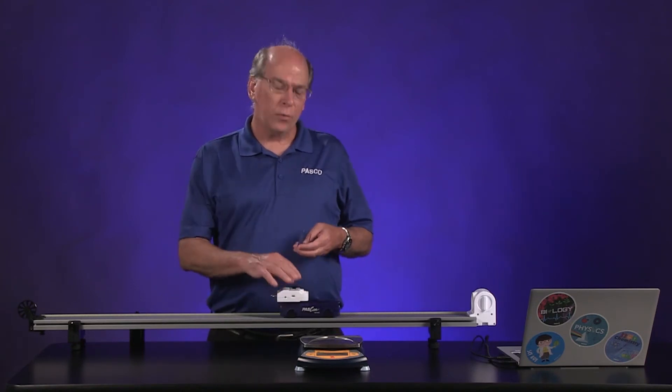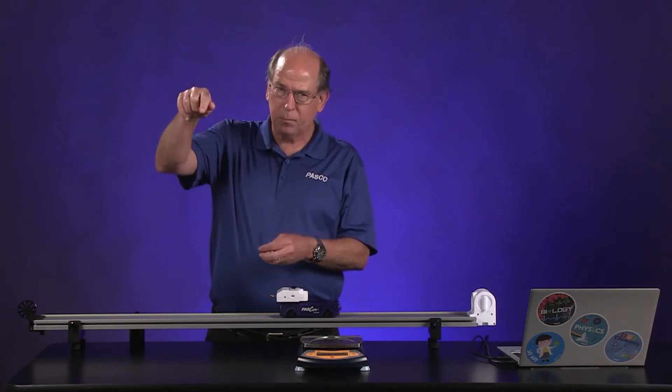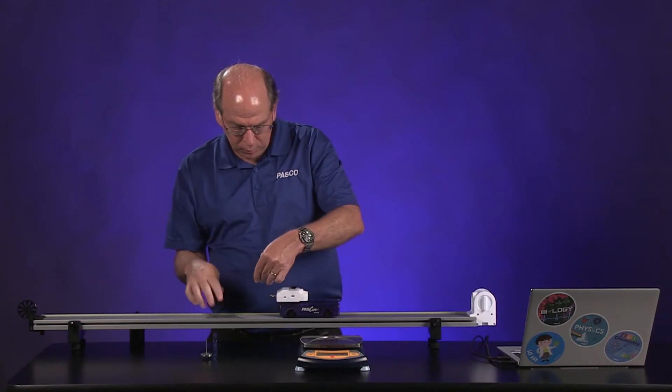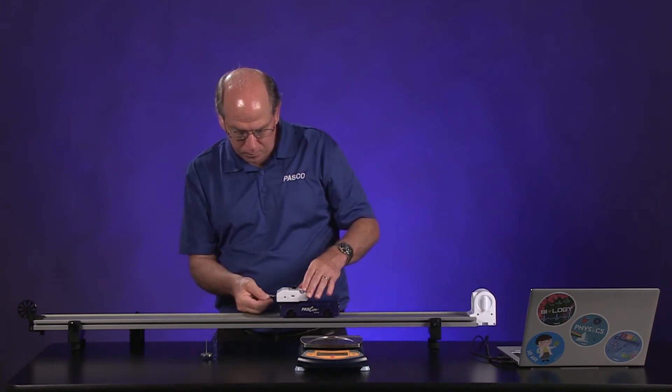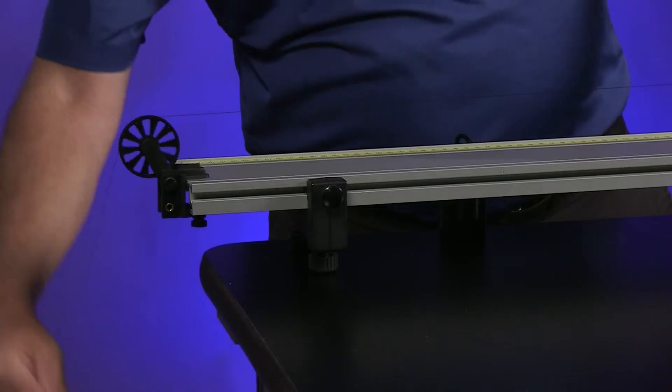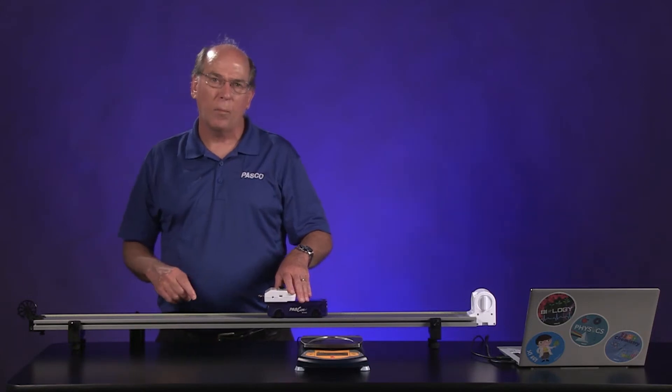We also want to make sure that the string is level by adjusting the pulley and that it's not rubbing on anything. And so to test that out, we run it over here. And so you make sure it's going over the pulley, not rubbing on anything, and it's pretty level.